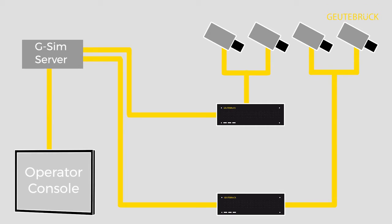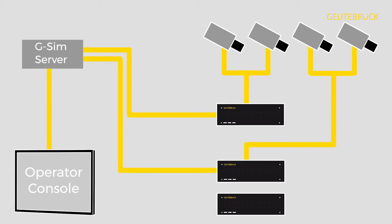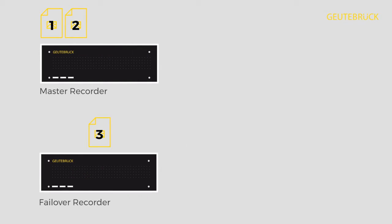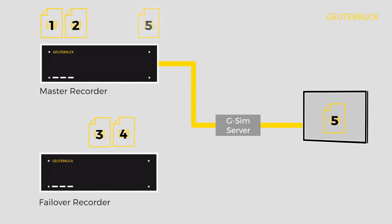Once the repaired unit returns to the system, the original functionality will be restored. The video footage which has been recorded on the spare unit will remain on this device. G-SIM exactly knows where the footage is placed and ensures that the user can run through the database without any restrictions.